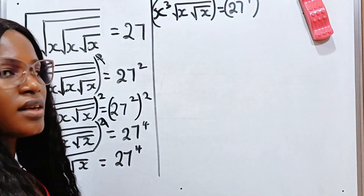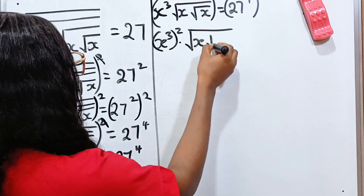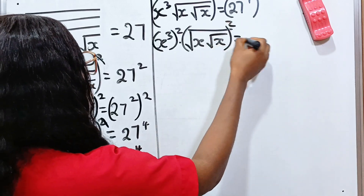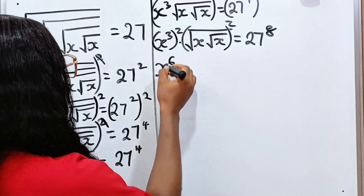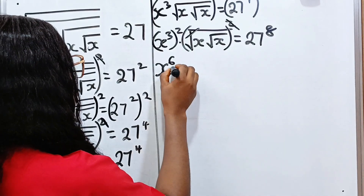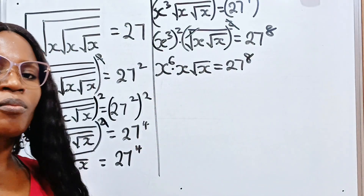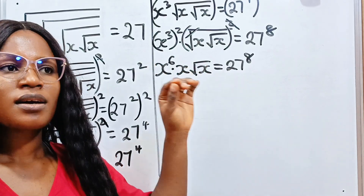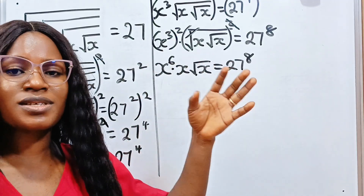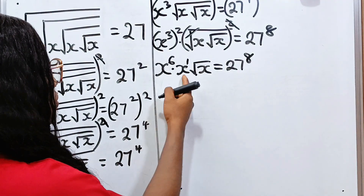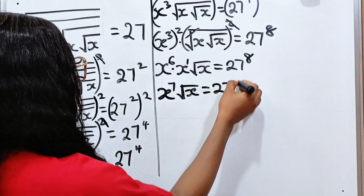Squaring both sides: x to the power of 3 squared multiplied by square root of x squared, equal to 27 to the power of 8. So we have x to the power of 3×2 = 6. The square removes the root, leaving us with x multiplied by root x equal to 27 to the power of 8. Gradually we are reducing the number of square roots. This sentence has x to the power of 1, so adding powers: 6+1 = 7. We now have x to the power of 7 times root x equal to 27 to the power of 8.